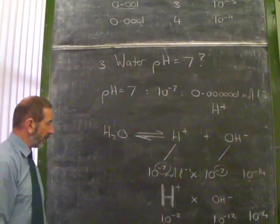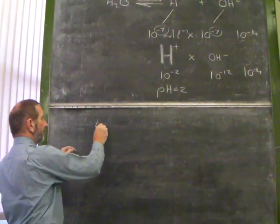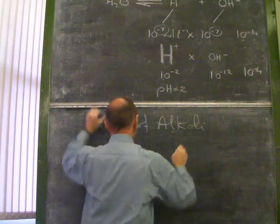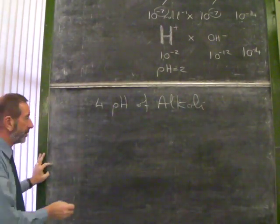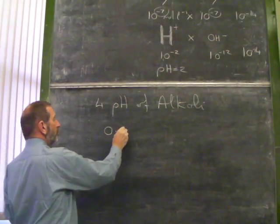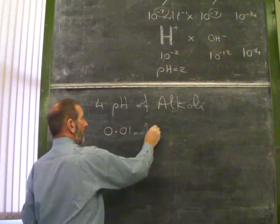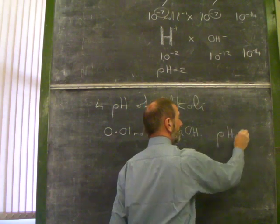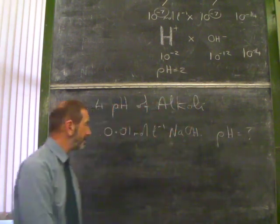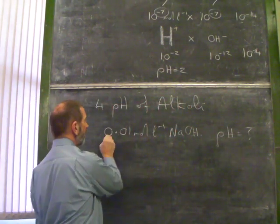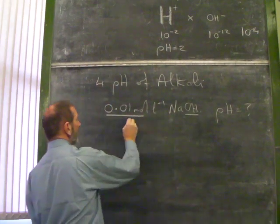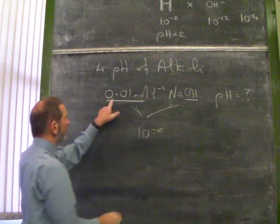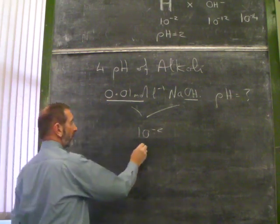What about alkalis? Can we work out the pH of an alkali? Let's take an example. Suppose we have 0.01 moles per litre sodium hydroxide. And the question is, what is its pH? Where do we begin? Well, we can see that the concentration of the alkali is 10 to the negative 2, 0.01. That's the value for hydroxide.